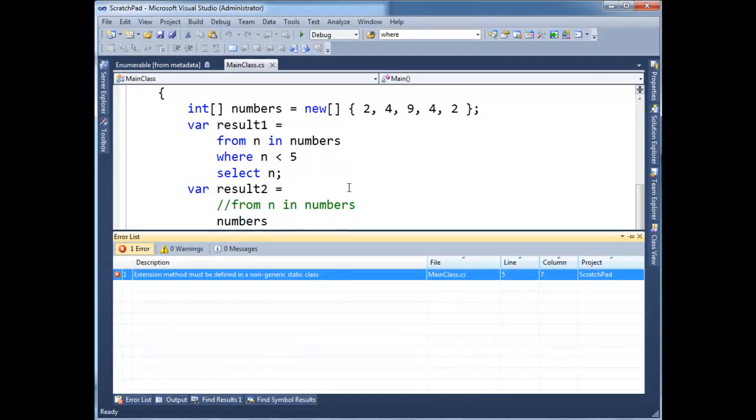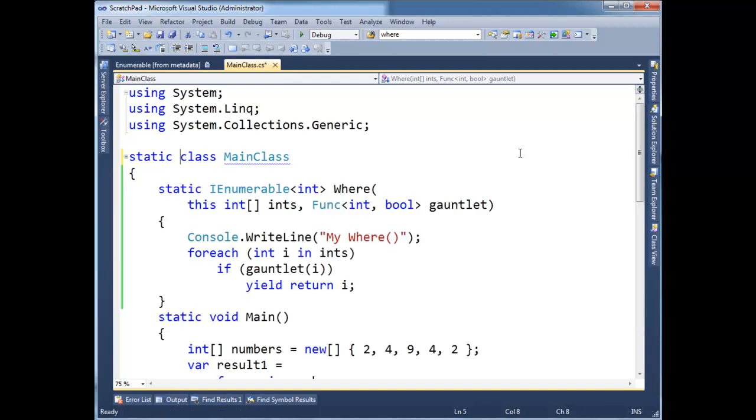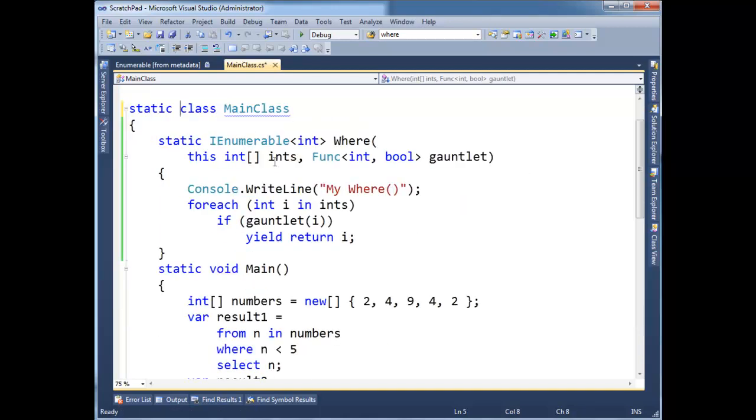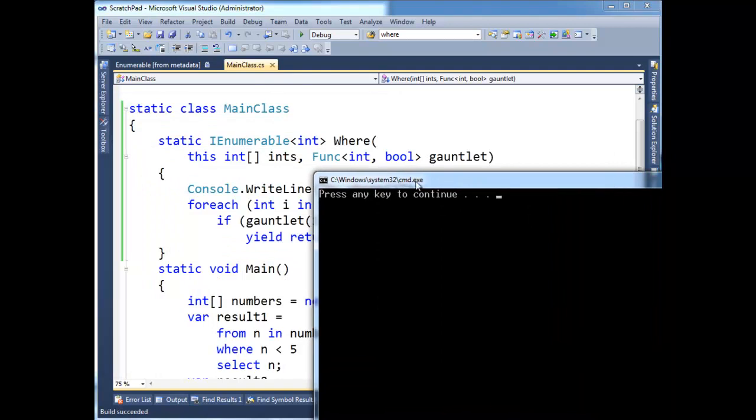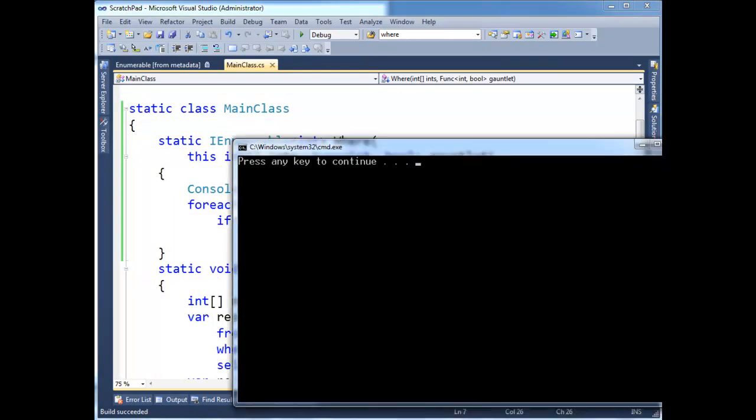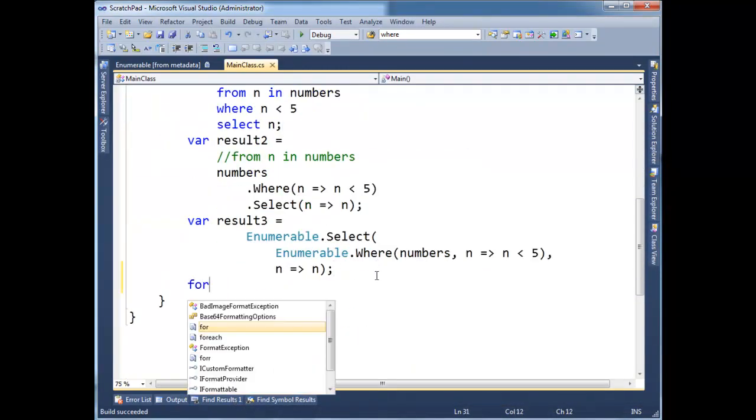Extension method's supposed to be static class, of course. Let's make it static, static up here, control M M, to re-open that. Okay, control F5, notice no output, we don't see my where clause happen anywhere, because I didn't for each, I didn't consume what was being returned here from any of my queries. So let's, let's consume one of them, and it doesn't matter which one.